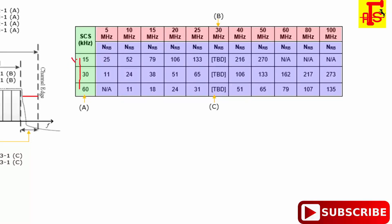In 5G, multiple subcarrier spacings are defined: 15 kHz, 30 kHz, 60 kHz, and 120 kHz. In LTE only one subcarrier spacing was used. For 20 MHz in LTE there are 100 resource blocks, and for 10 MHz there are 50 resource blocks. In 5G, for different subcarrier spacings like 30 kHz and 60 kHz, different numbers of resource blocks are used.